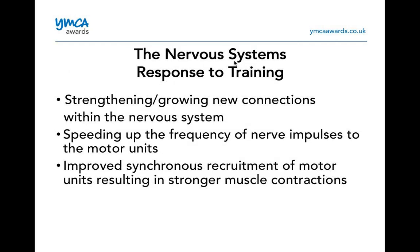Response to training for the nervous system includes: strengthening and growing new connections within the nervous system, speeding up the frequency of nerve impulses to motor units, and improved synchronised recruitment of motor units, resulting in stronger muscle contractions.